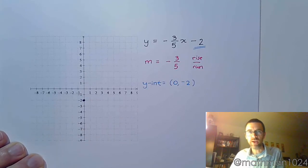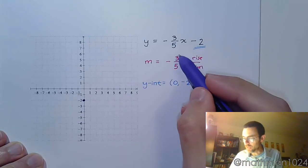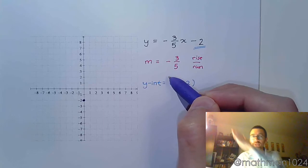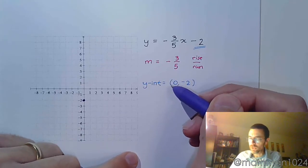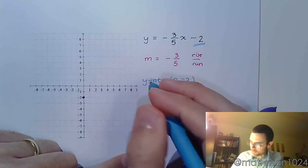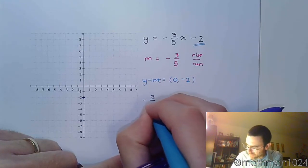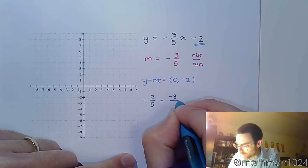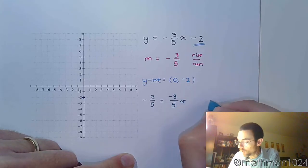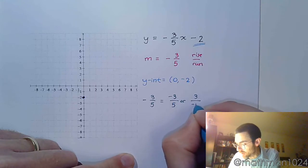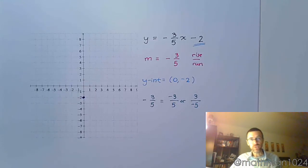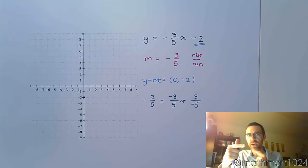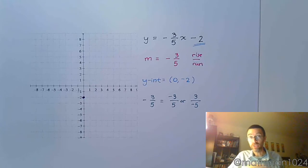My slope is negative 3 over 5, which means as I go from point to point, I'm going with this ratio. Since this is negative, I'm going to be going down from left to right. We have the fraction negative 3 over 5, and we can look at it in one of two ways: negative 3 over 5, or 3 over negative 5. The emphasis is we only have one negative sign. You can't put it in both numerator and denominator because that would be a positive. But clearly, we have a negative slope.